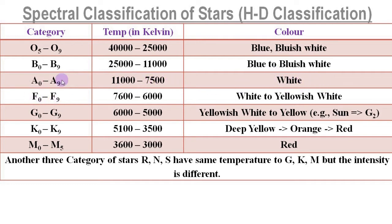F category stars have temperature 7,600 Kelvin to 6,000 Kelvin, and their color is white to yellowish white. The G category stars have temperature 6,000 Kelvin to 5,000 Kelvin, and color of these stars is white to yellow. Our sun falls into this category. Specifically, the sun is a G2 star, meaning the temperature of the sun is nearly equal to 6,000 Kelvin.